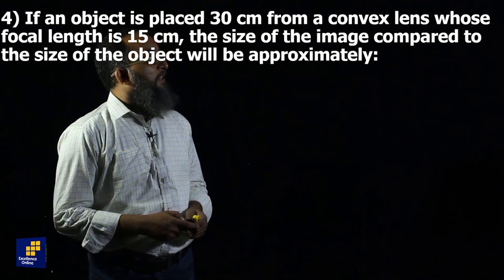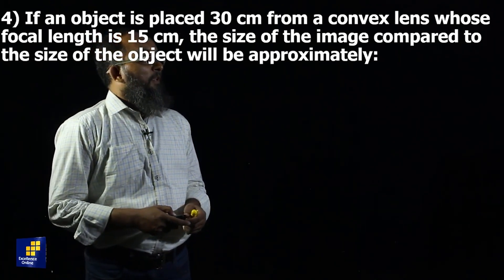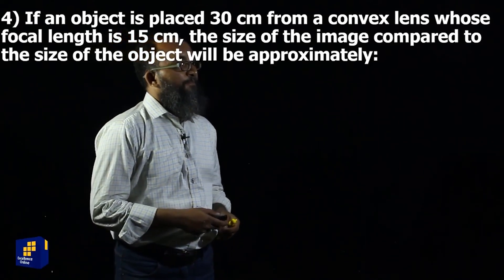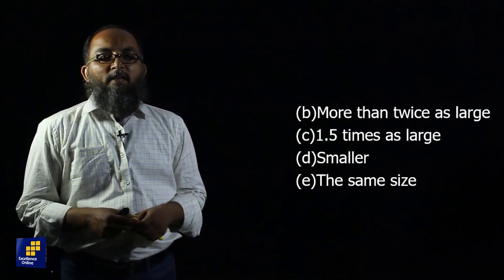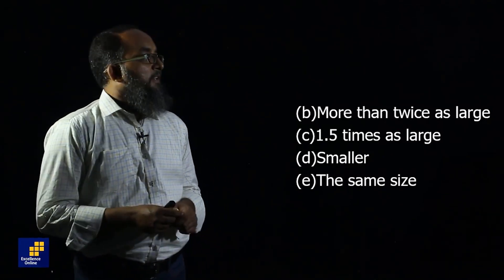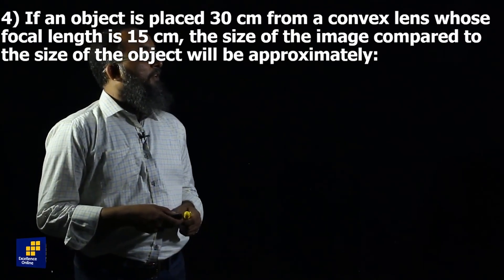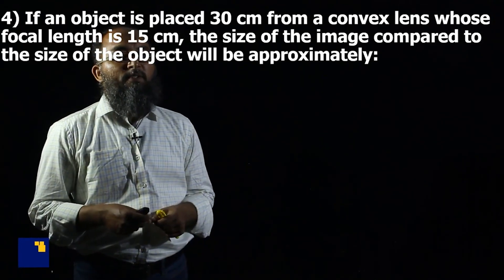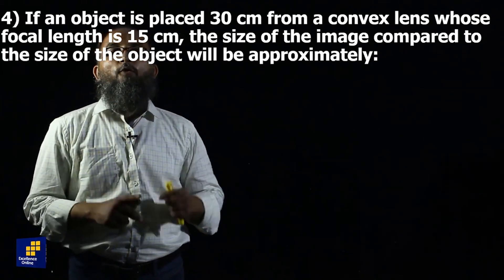Question 4 is here on the screen. If an object is placed 30 centimeter from a convex lens whose focal length is 15 centimeter, the size of the image compared to the size of the object will be approximately. Students, we have to see first what the focal length is and what the object position is. The question says focal length of the lens is 15 centimeter and the position of the object is 30 centimeter. It means that the object is placed at a distance twice the focal length.